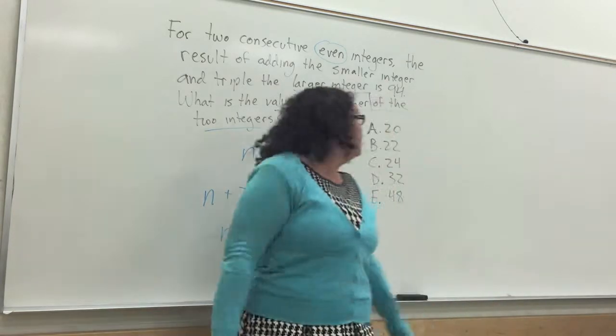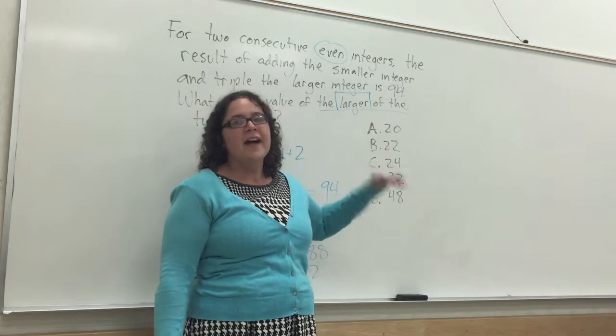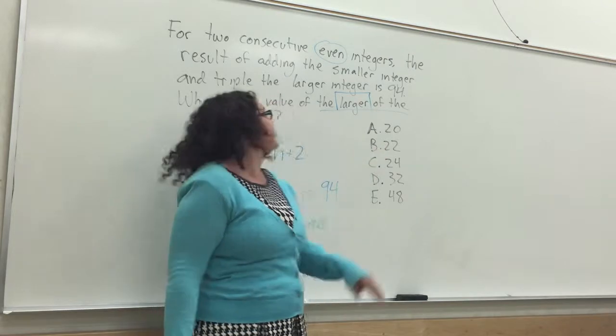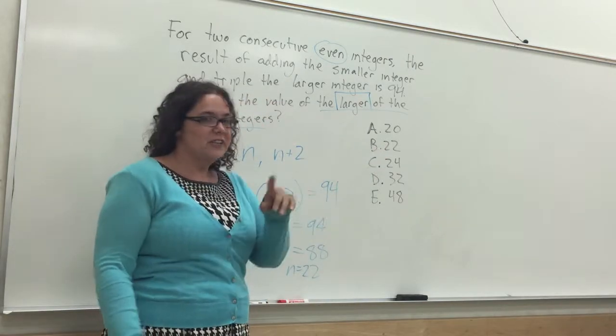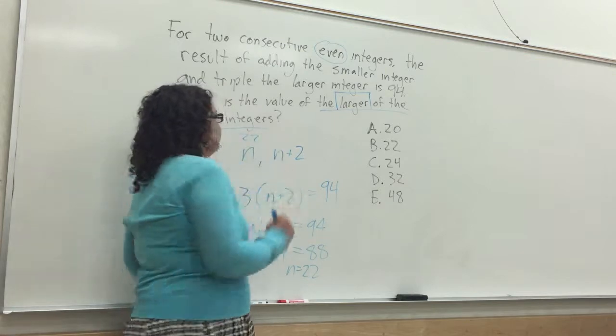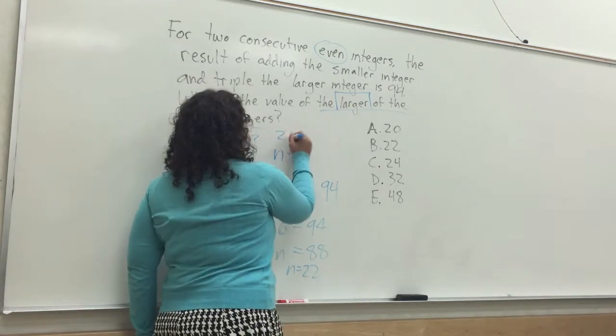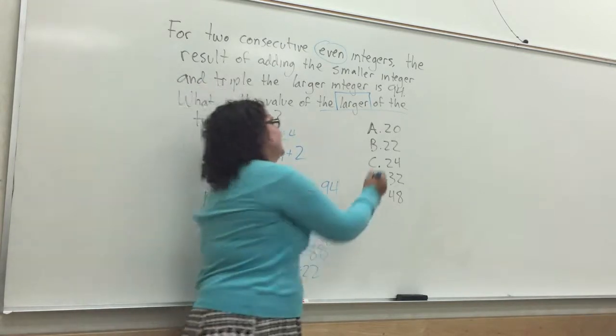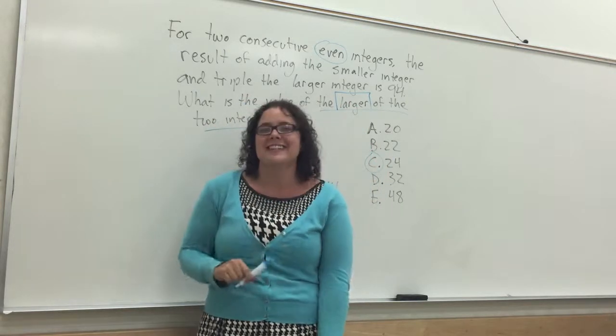So here's the part where we're like, n is 22! Awesome! B! Wrong! They remembered, that's why we underlined, they asked for the larger of the two integers. So if our n is 22, then our n plus 2 is 24. Answer C, and we nailed it!